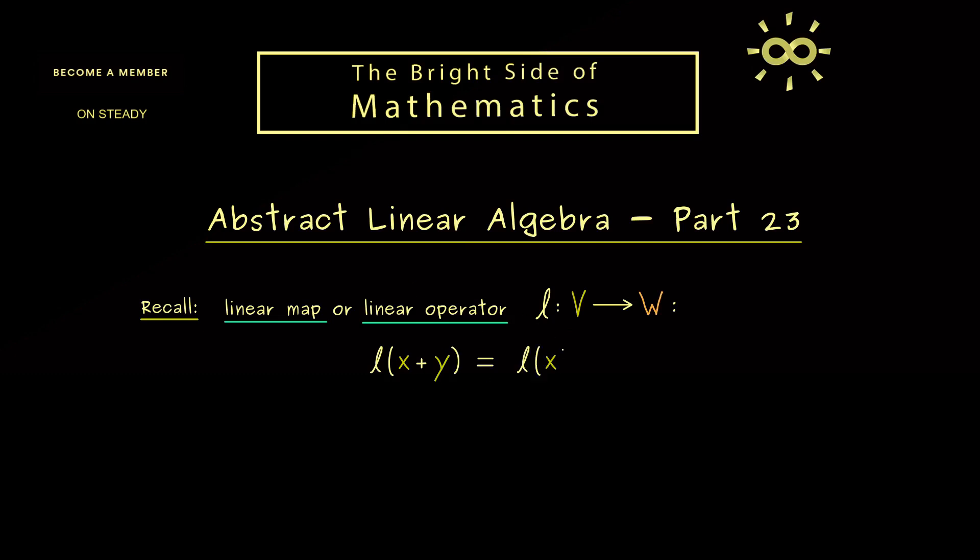First, it has to be additive, which means we can pull out the addition. And second, it has to be homogeneous, which means we can pull out scalars. So this is a natural definition for vector spaces, where we only have these two operations: plus and the scalar multiplication.